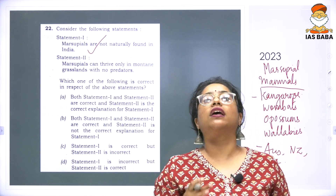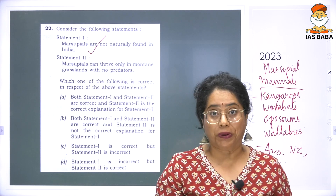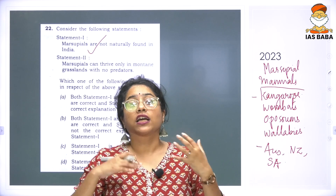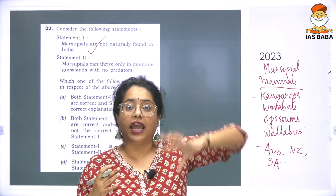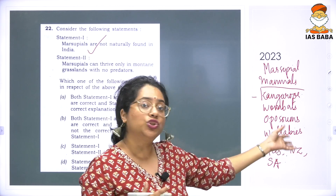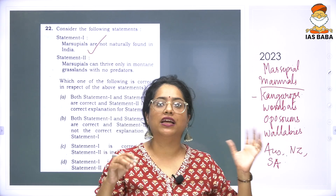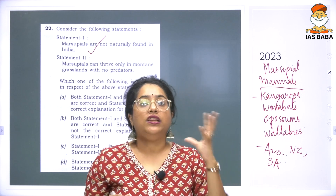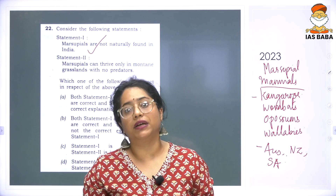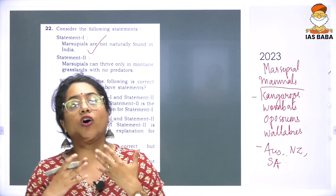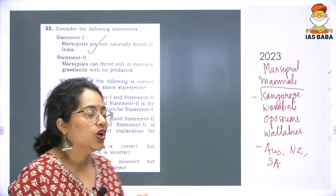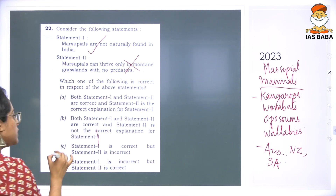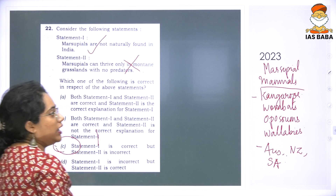Statement 2 says marsupials can thrive only in montane grasslands with no predators. Montane grasslands means grasslands on top of or on the edges of mountains. But marsupials are found in Australia, New Zealand, and South America — not just places with mountainous grasslands. They have forests, forest floors, and different habitats, and marsupials can thrive in any of these habitats. So the statement that says only in grasslands is wrong. Looking at all the statements, option C happens to be the answer.